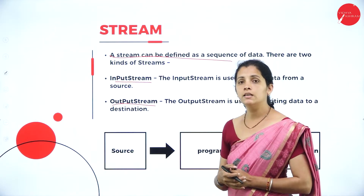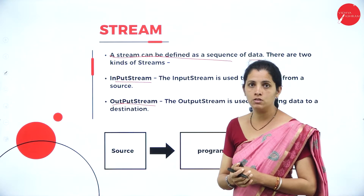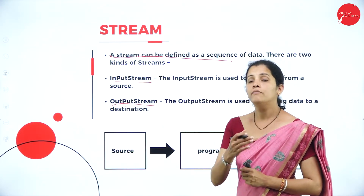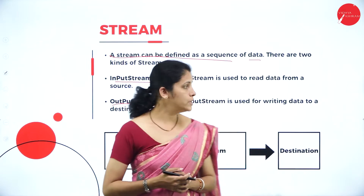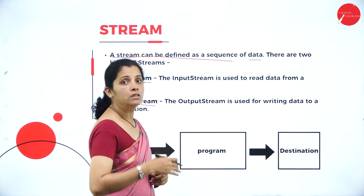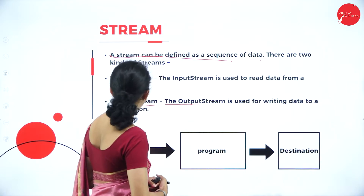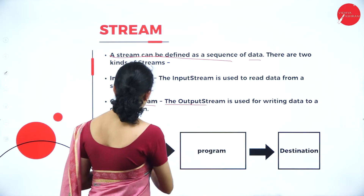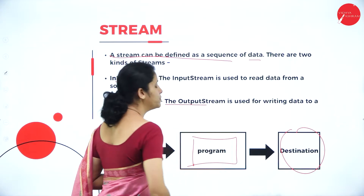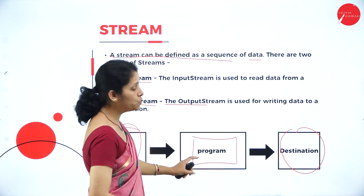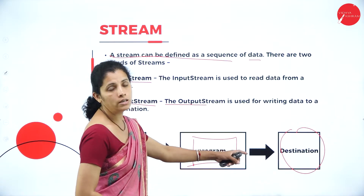The input stream, as the name indicates, is used to accept or read data from a source — for example, a keyboard or file. The output stream is used to write content to the screen or monitor; it writes data to a destination. A program is capable of reading input from the source using an input stream and writing content to a destination using an output stream.